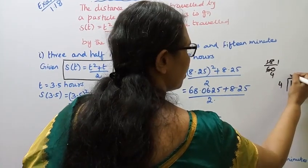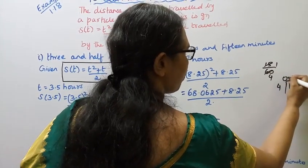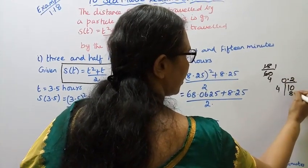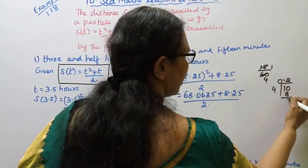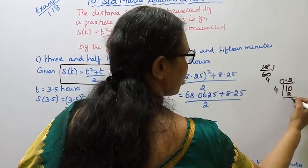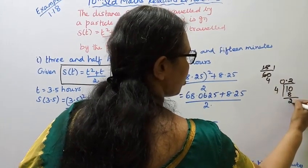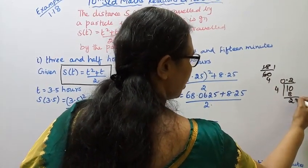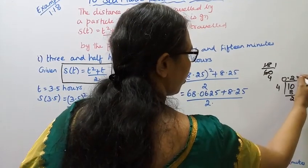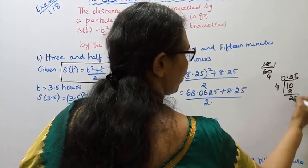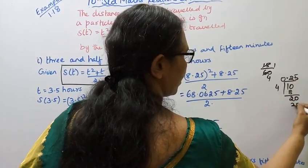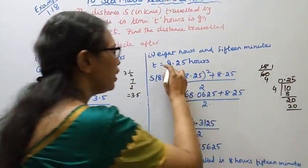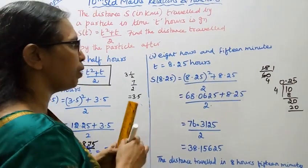0.4 twos are 8, 4 twos are 8, balance 2. Adding a zero, 5 fours are 20, giving 0.25. Already 8 hours is included. So t equals 8.25.